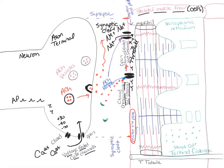The action potentials travel over the surface of that membrane until they get to this tubule called a T-tubule. The action potentials then travel down the T-tubule until they get to this structure called the terminal cisternae.